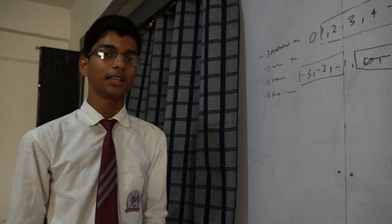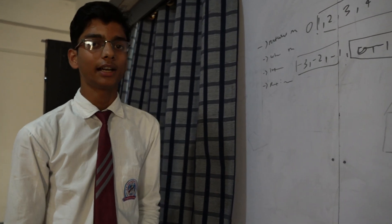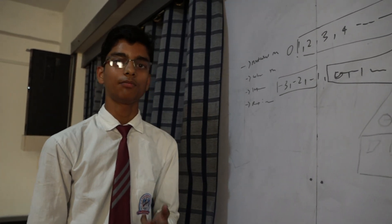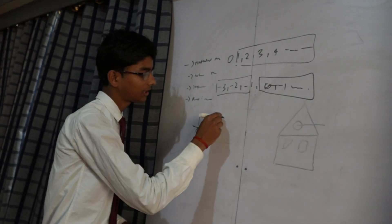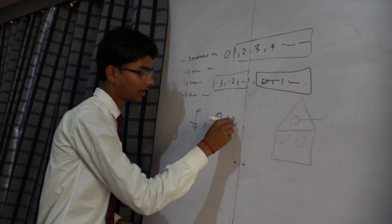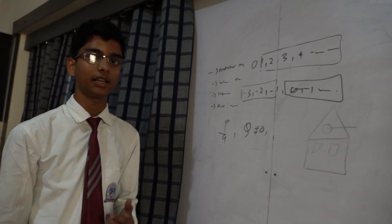Further, next topic is rational number. As we know that, a number which is in form of p by q, where q is not equal to 0 and p and q have not common factor than 1.